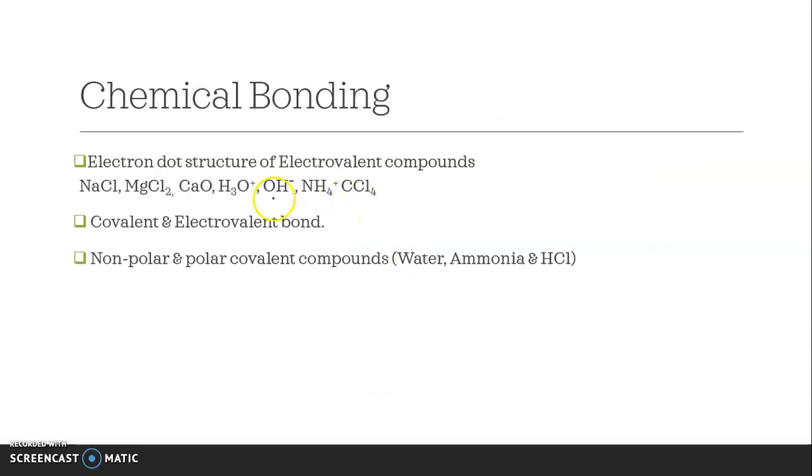From chemical bonding, do the electron dot structure of the following compounds: NaCl, MgCl2, CaO, HCO+, OH-, NH4+, and CCl4. Even if some came last year, you have to practice them. Don't skip any. Practice all of them. Then do covalent and electrovalent bonds.